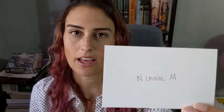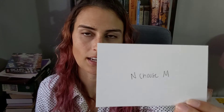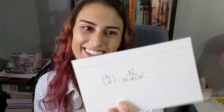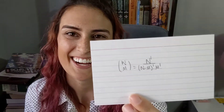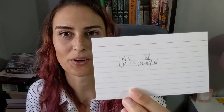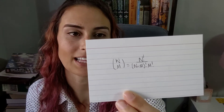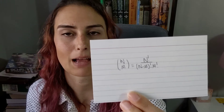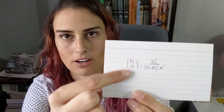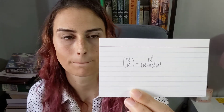N choose M — also known as a combinatorial — N choose M equals N factorial over (N minus M) factorial times M factorial, and this is the notation for it.